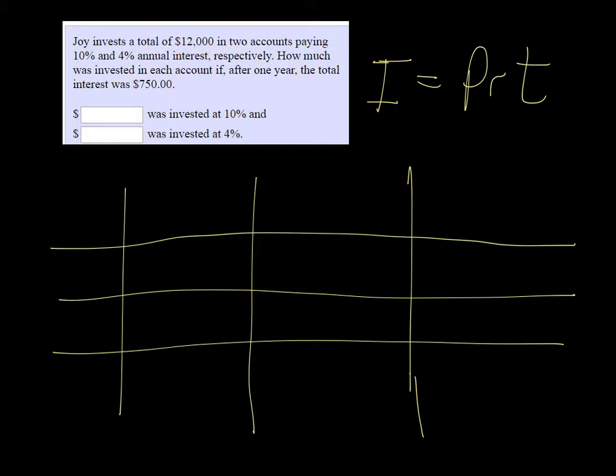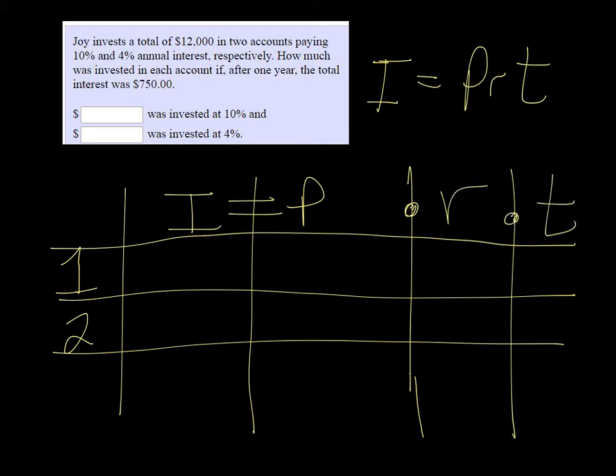And we have account one and account two. And I is equal to P times, oh I need one more, times R times T. So we need five columns and four rows.